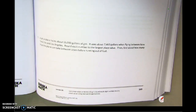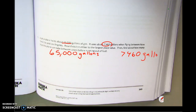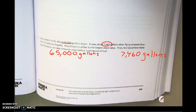A jet airplane holds 65,000 gallons — I'm going to write down my number. It uses about 7,460 gallons when flying between New York City and Lafayette. So this is the fuel used on one trip. I'm just talking myself through my numbers. I stop at each point.